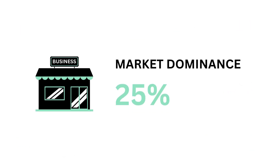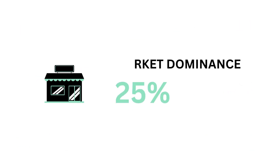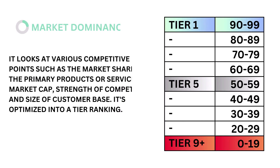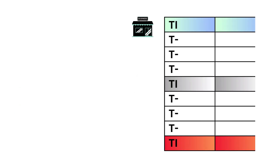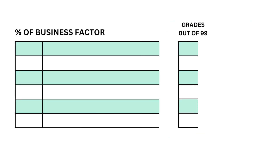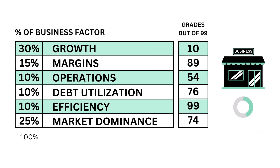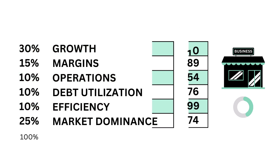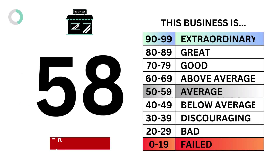Lastly in the business factor is market dominance, which accounts for 25%. Market dominance looks at various competitive data points such as market share, primary product or services, market cap strength, competitors, and size of customer base. It's optimized into a tier ranking. The models tell us that a market dominance tier 5 is considered average. Here's our tier number and market dominance grade. To recap, here are the six metric grades, and when we put them together we get our business grade.